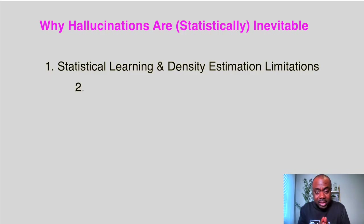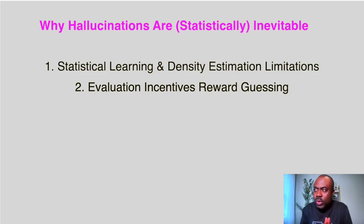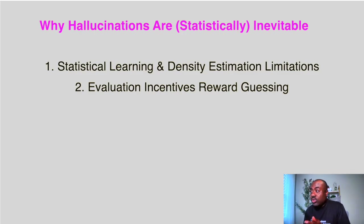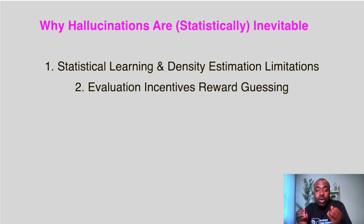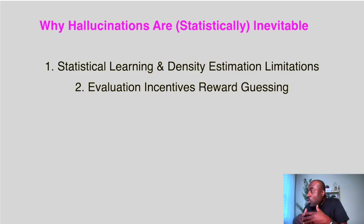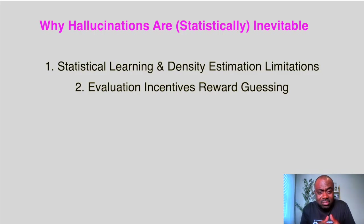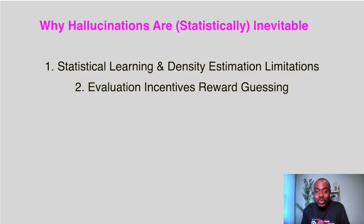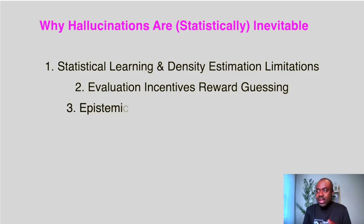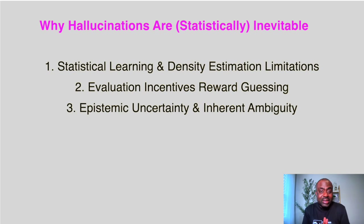Number two is evaluation incentives. Today's evaluation incentives reward guessing, because most benchmarks use binary scoring — correct versus incorrect — with no reward for expressing uncertainty or saying 'I don't know.' So the only way to improve performance is to guess and hallucinate in uncertain situations, so that the reward will be higher.